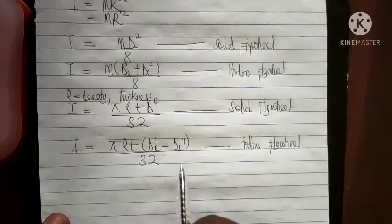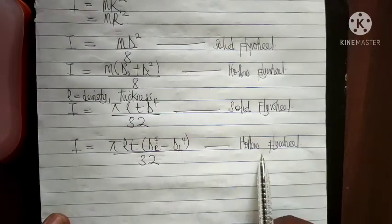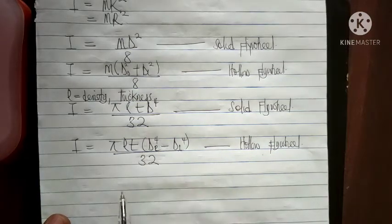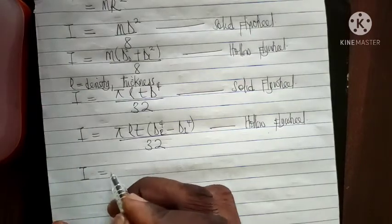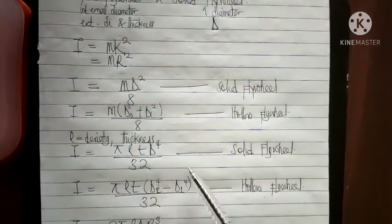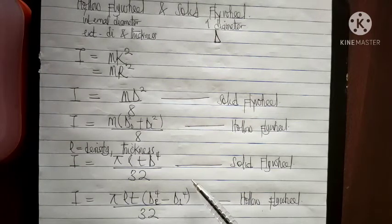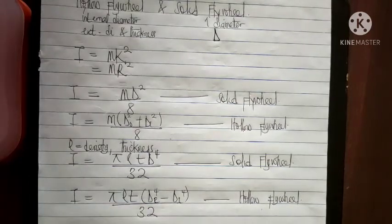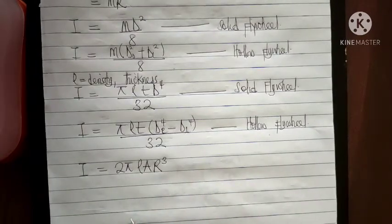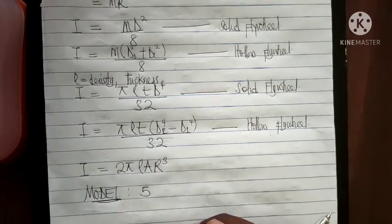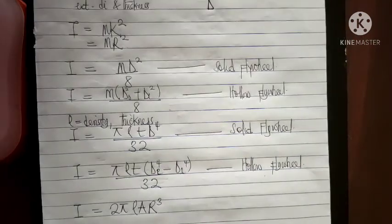If the question gives both internal and external diameter, apply the hollow flywheel formula for I. If only one diameter is given, apply the solid flywheel formula. The appropriate formula is determined by the parameters given in the question. In the next tutorial video, we will look at different models on the crank effort diagram — there are five different models, and the next video will cover model one and model two. Thank you very much, have a wonderful day.